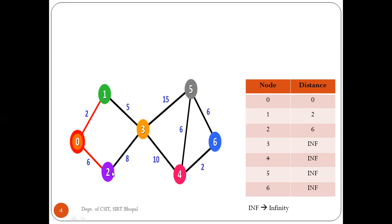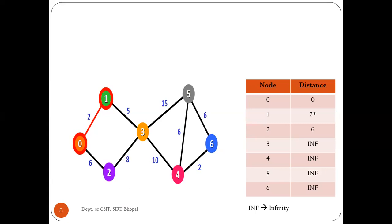Similarly, for node zero to node two, we can see that the distance is two, which is less than six. Two is less than six, so we prefer to follow the route through node zero to node one — meaning that route gives us a smaller distance compared to going directly with weight six.